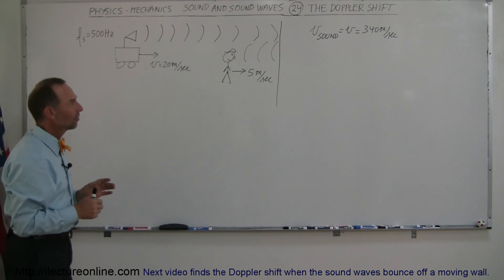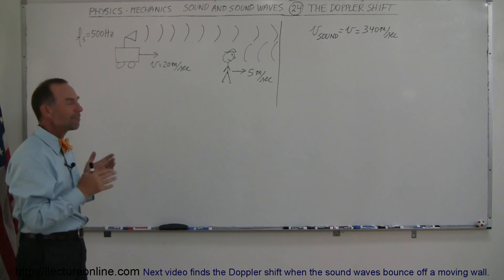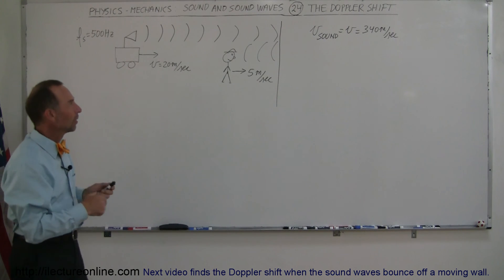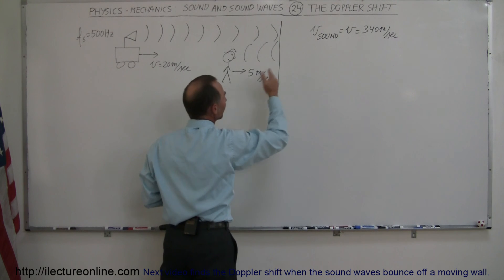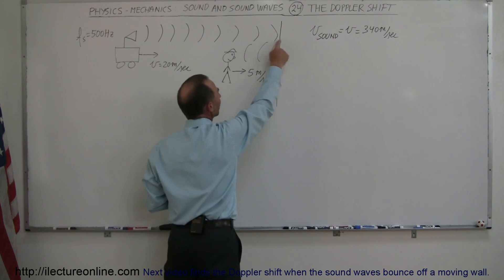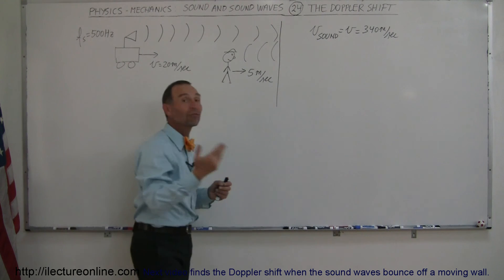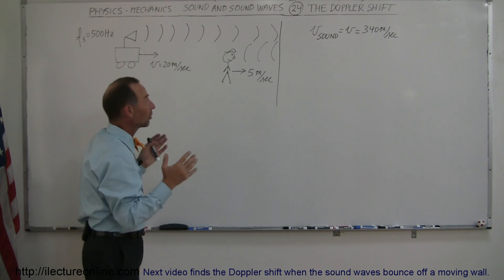So the first question is, the wall is not moving, does that make any difference? How does that work? So the waves are bouncing off the wall, coming back, and if the wall is not moving, then the frequency does not change as it's reflected off the wall and the wavelengths are not changing.